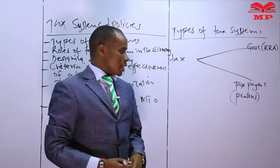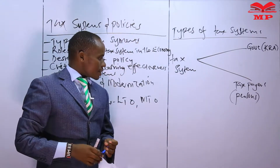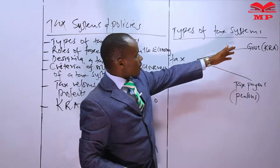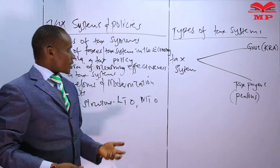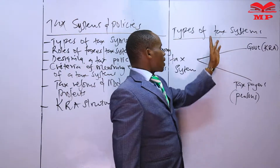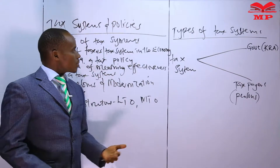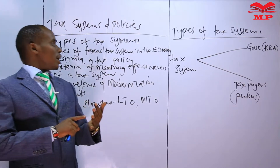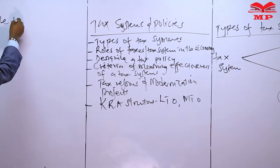So tax is an amount paid by taxpayers to the government, or an amount collected by the government from the taxpayers. With that, we can define what is meant by a tax system. Now, moving on to the types of tax systems: we have two major types. Number one is the single tax system, and number two is the multiple tax system.